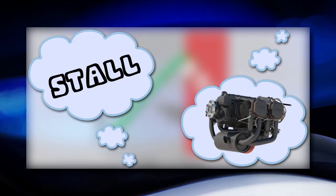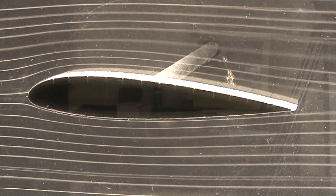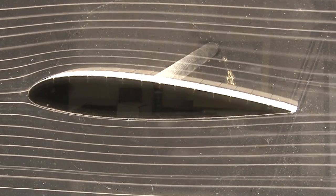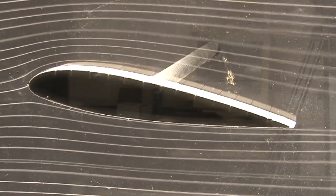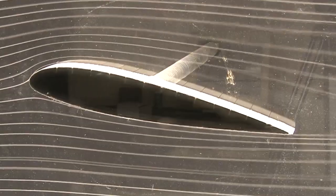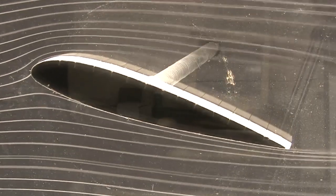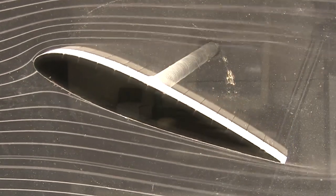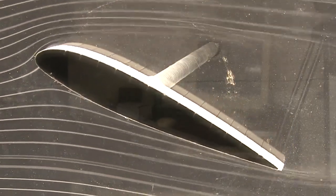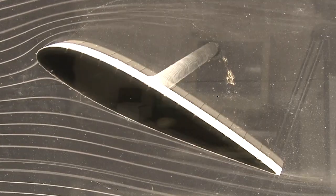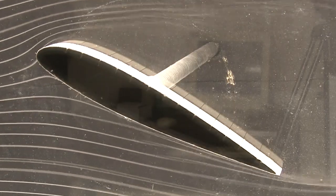When some people think of the word stall, they think about the engine stalling. However, we are talking about an aerodynamic stall, which has nothing to do with the engine. Stalls happen when the normally smooth airflow over the wing separates from the wing's upper surface, resulting in turbulent airflow. The parts of the wing that have turbulent airflow passing around them are not producing any lift.